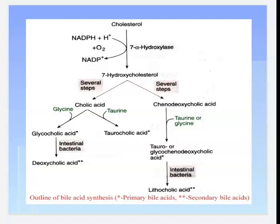Tauro- or glyco-chenodeoxycholic acid is converted into lithocholic acid with the help of intestinal bacteria. Cholic acid is converted into glycocholic acid with the involvement of glycine, and glyco-chenodeoxycholic acid is converted into deoxycholic acid by the same intestinal bacteria. Deoxycholic acid and lithocholic acid are secondary bile acids, whereas glyco-chenodeoxycholic acids are primary bile acids.